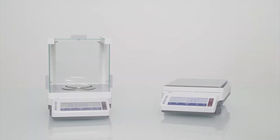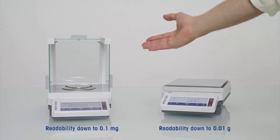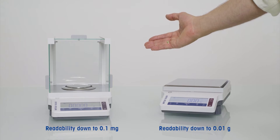Let's have a closer look. The JE on the right side is a gold balance with readabilities down to 0.01 gram. On the left side you can see a carat balance which have a readability down to 0.1 milligram.